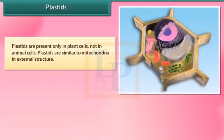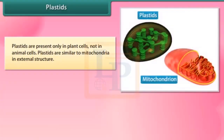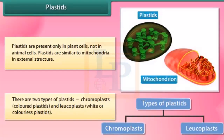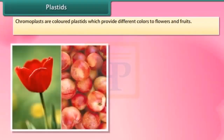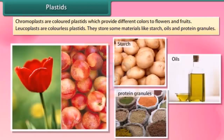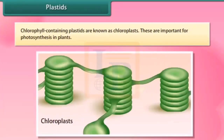Plastids are present only in plant cells, not in animal cells. Plastids are similar to mitochondria in external structure. There are two types of plastids: chromoplasts (colored plastids) and leukoplasts (white or colorless plastids). Chromoplasts provide different colors to flowers and fruits. Leukoplasts are colorless plastids that store materials like starch, oils and protein granules. Chlorophyll-containing plastids are known as chloroplasts, which are important for photosynthesis in plants.